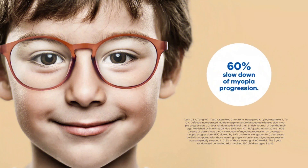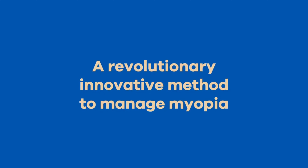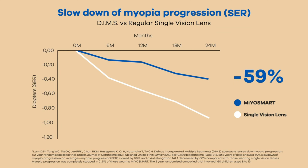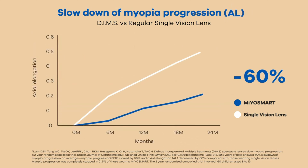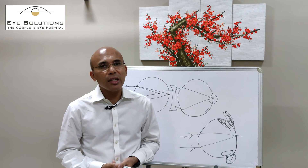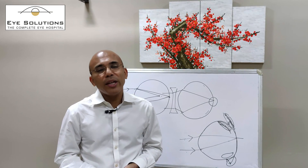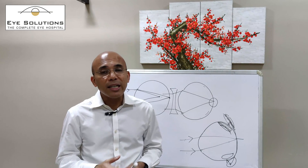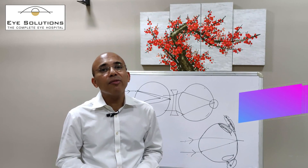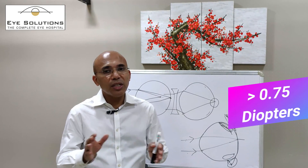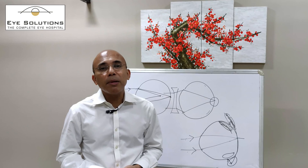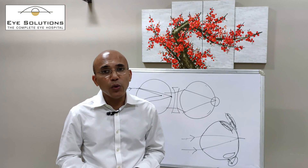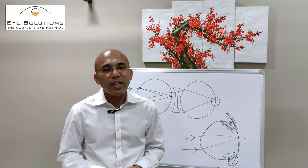Studies show there is a 60% chance that myopia will not increase when these lenses are worn, with follow-up studies of up to three years. The company is so confident these lenses work that if your prescription increases by 0.75 diopters in the first six months, they will replace the lenses for free with the new number.